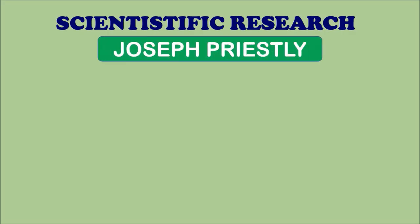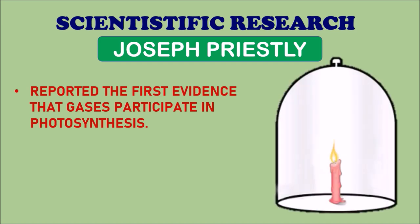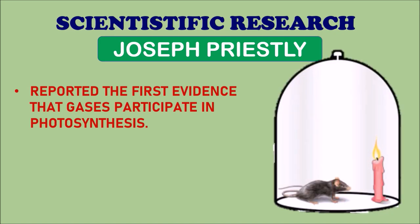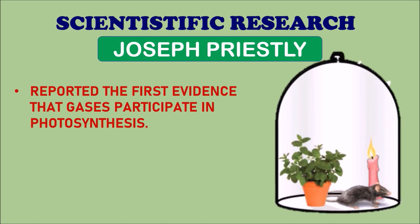The next scientist is Joseph Priestley. He reported the first evidence that gases participate in photosynthesis. He performed an experiment with a candle, a mouse, a plant, and a bell jar. He placed a candle inside an airtight bell jar — after some time, the candle went out. Next, he tried with both a candle and a mouse inside; this time the candle went out and the mouse fainted. With this simple experiment, we can easily conclude the role of gases in the process of photosynthesis.